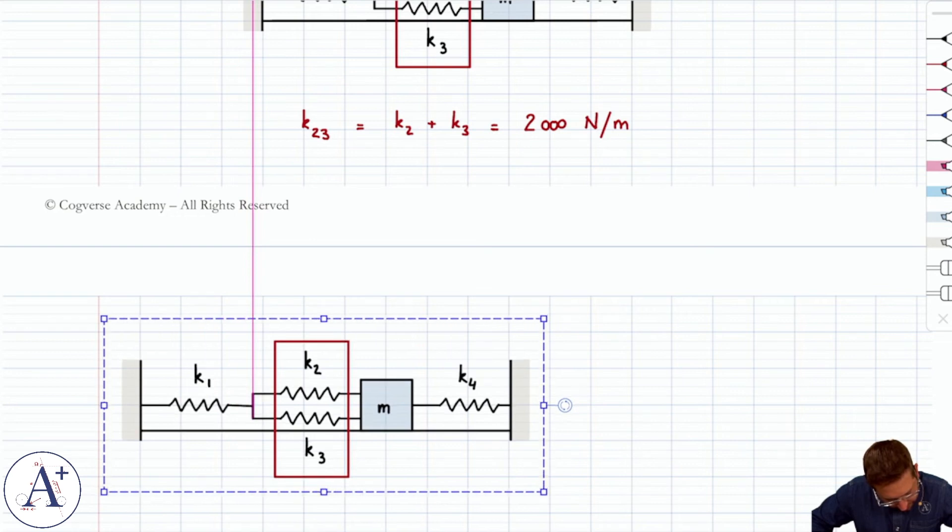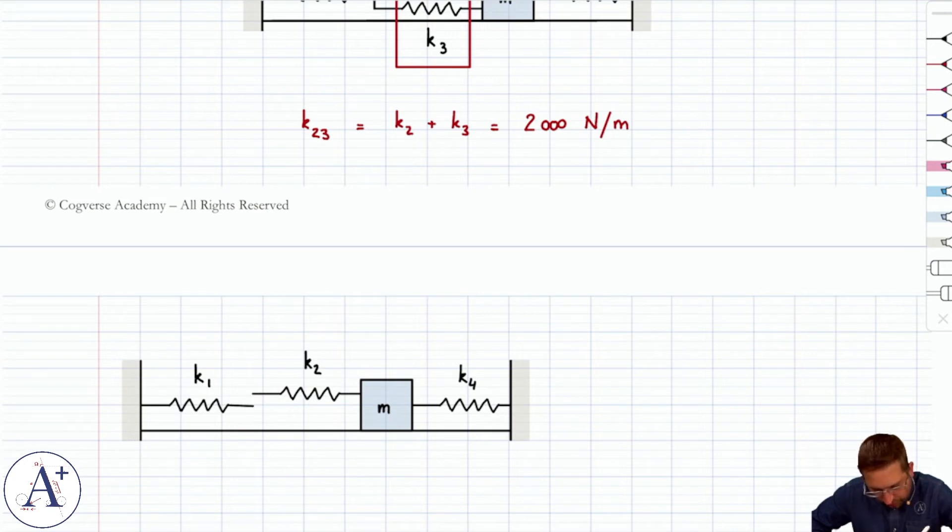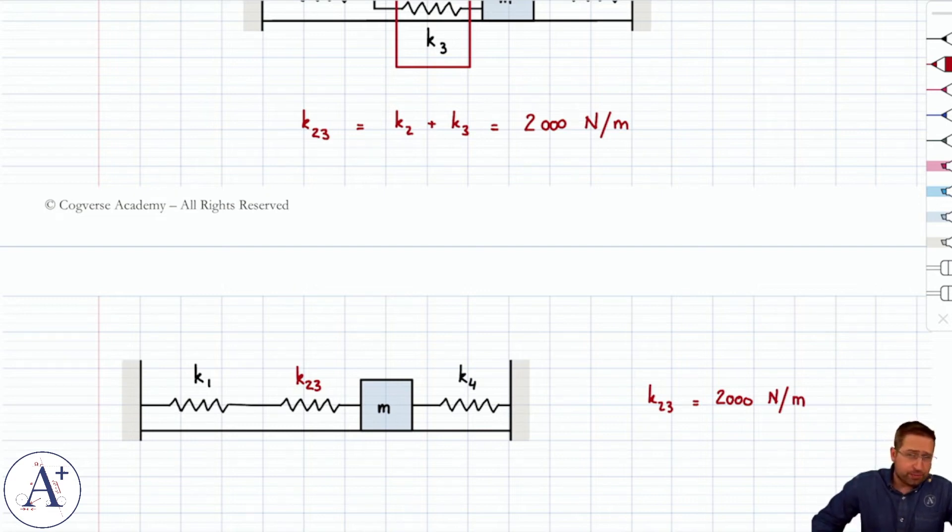So what you would then do is you would replicate this drawing. And instead of drawing two springs for k2 and k3, you can get rid of one of them. And then you would call this one k2,3. So the arrangement above is identical from a point of view of the mechanical behavior to this arrangement here. So now you repeat the analysis. You say, well, I know what k2,3 is. K2,3, just for later reference, is 2,000 newtons per meter.